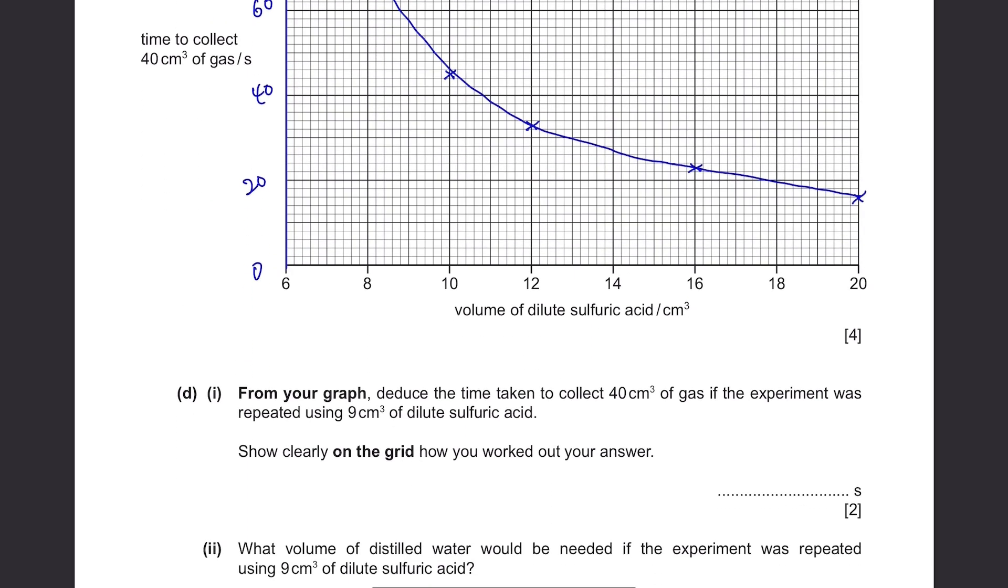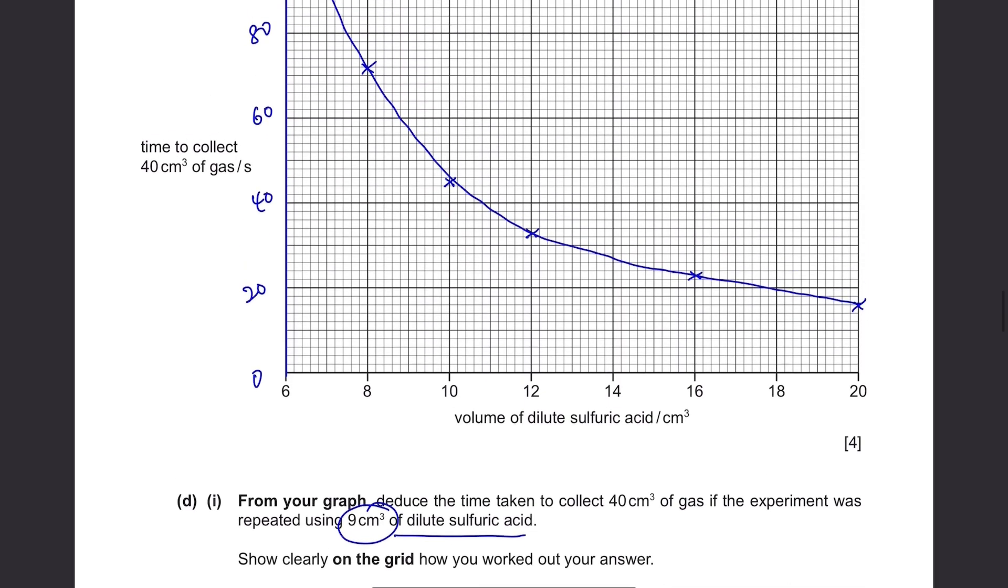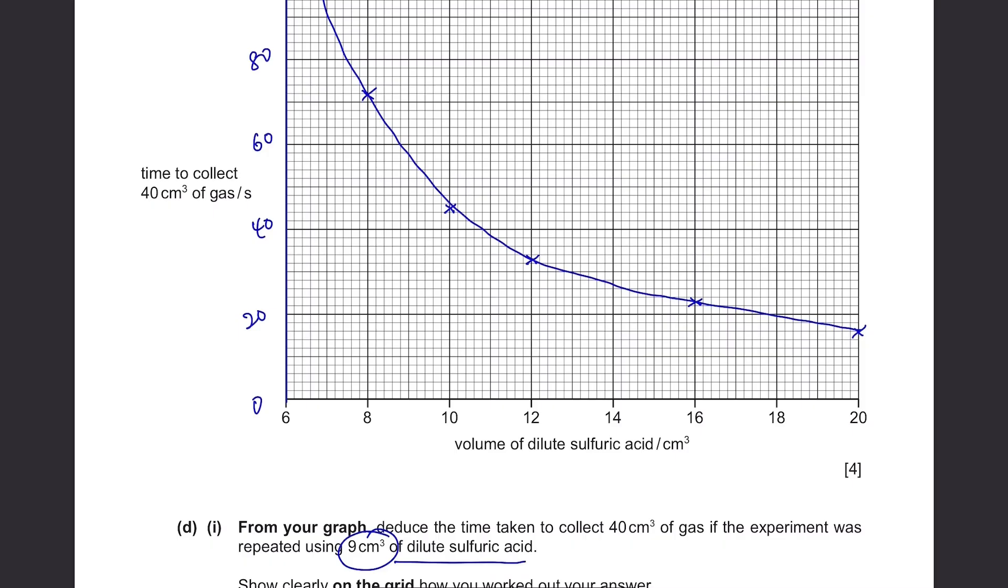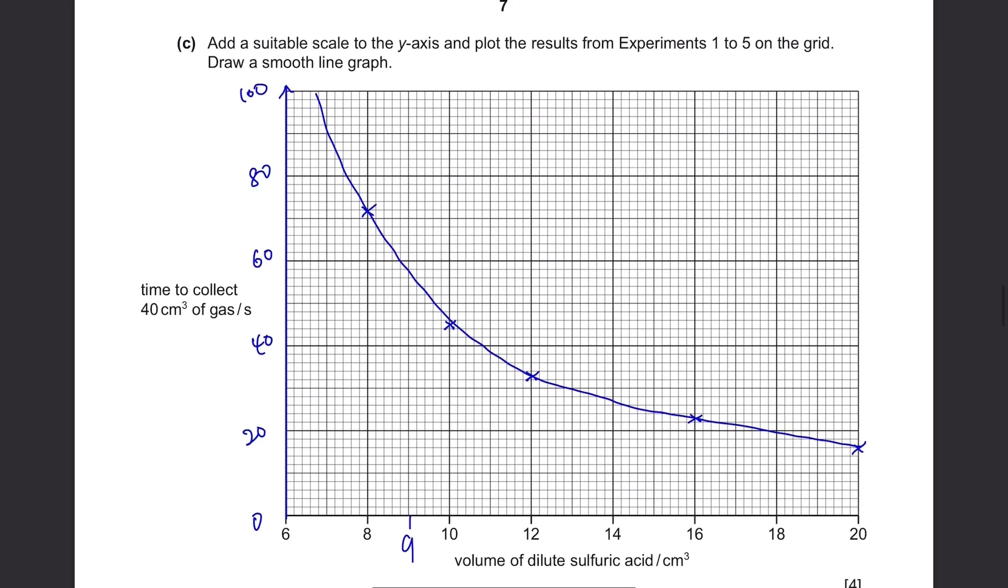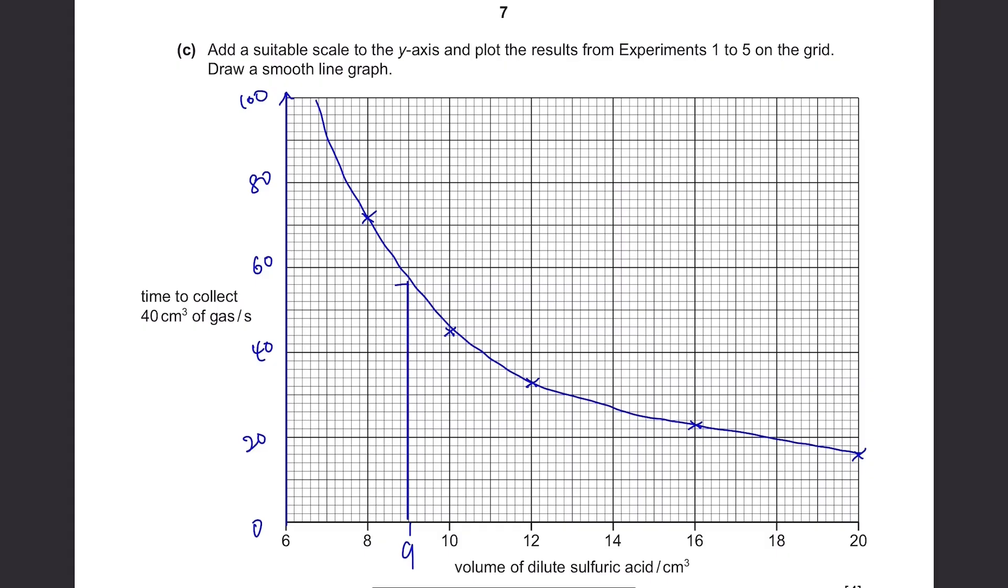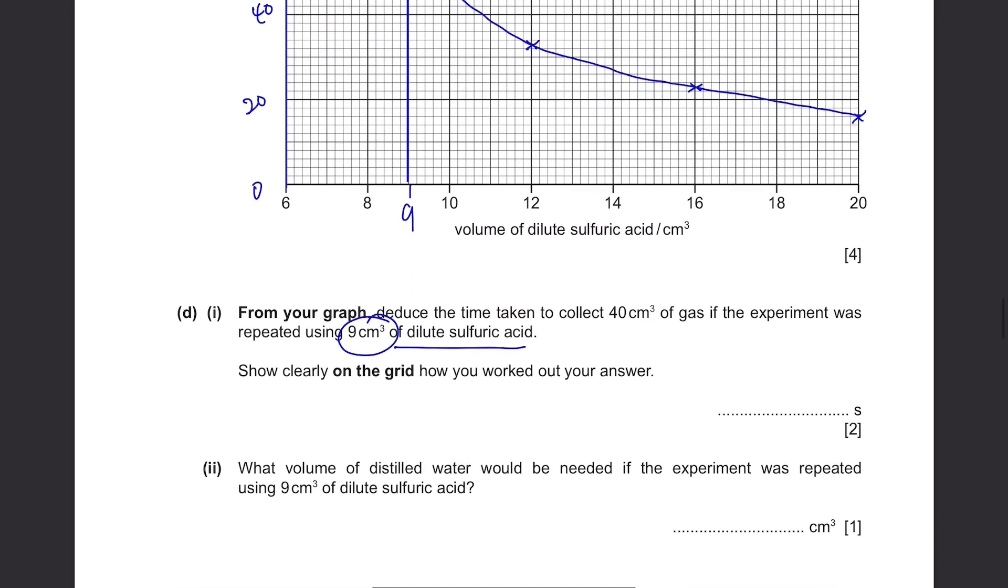From your graph, deduce the time taken to collect 40 cm cubed of gas if the experiment was repeated using 9 cm cubed of dilute sulfuric acid. So find the point where it's 9 cm cubed of dilute sulfuric acid. It's here. And then you just draw a straight line until you meet your graph. It's around 56 for me. And it's in the mark scheme that your answer should be within 54 to 56 seconds. So make sure you draw your graph accurately.